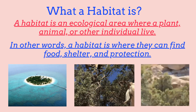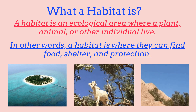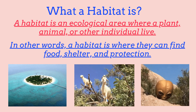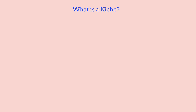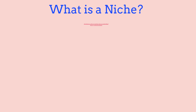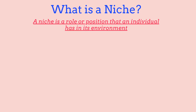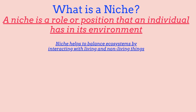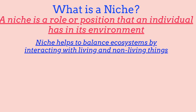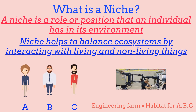At the end of this video, I'll be showing you a website that showcases the amount of live trees and environments around the world. So now let's go over what a niche is. A niche is a role or position that an organism has in its environment, and a niche helps to balance ecosystems by interacting with living and non-living things.